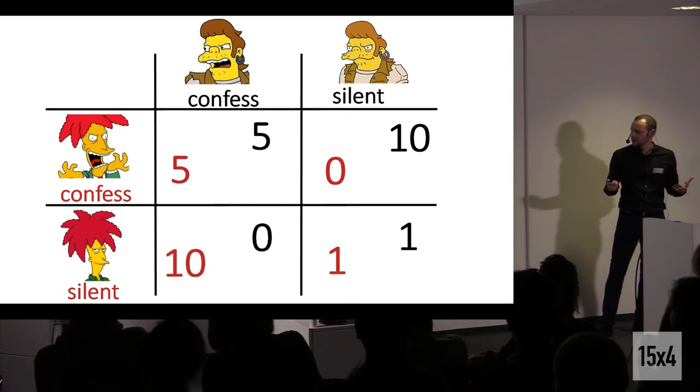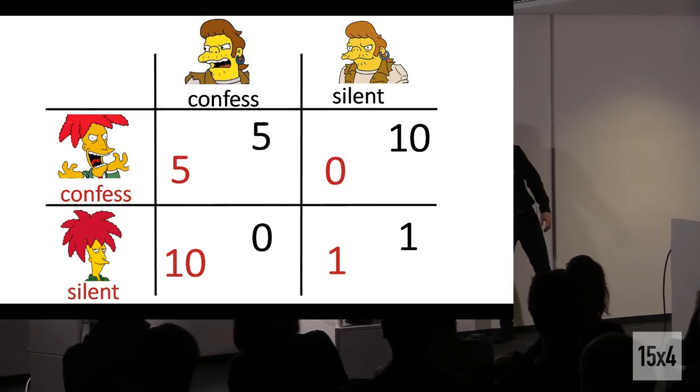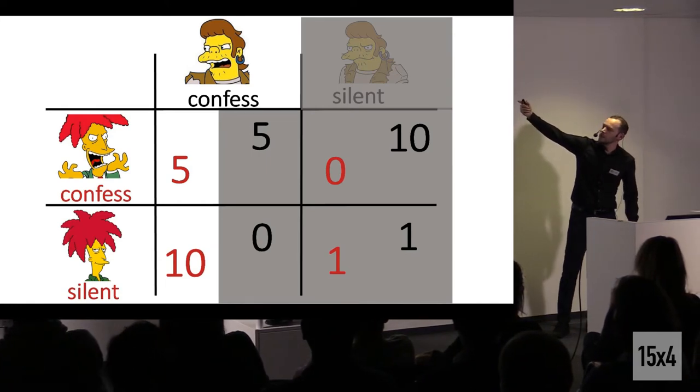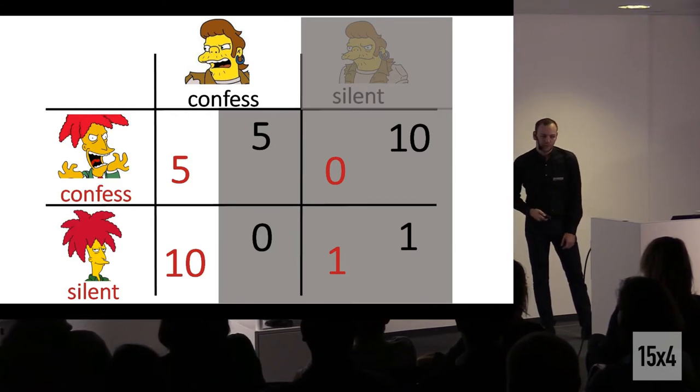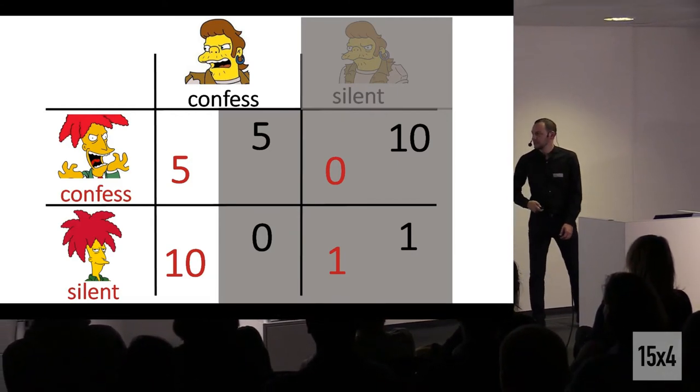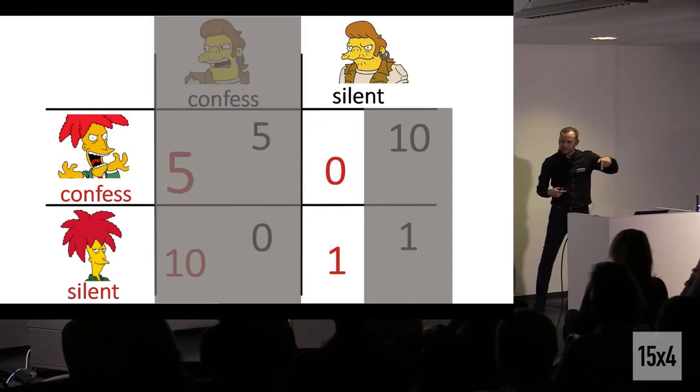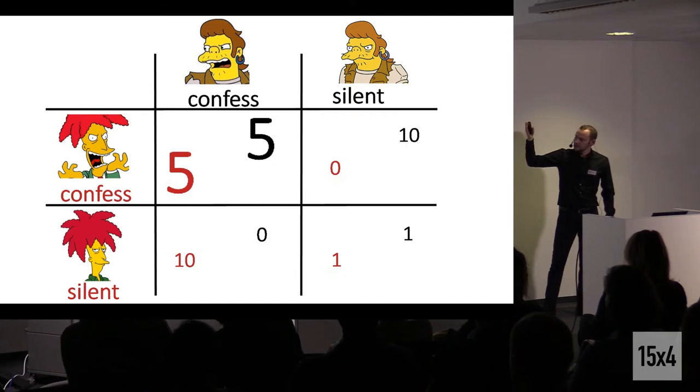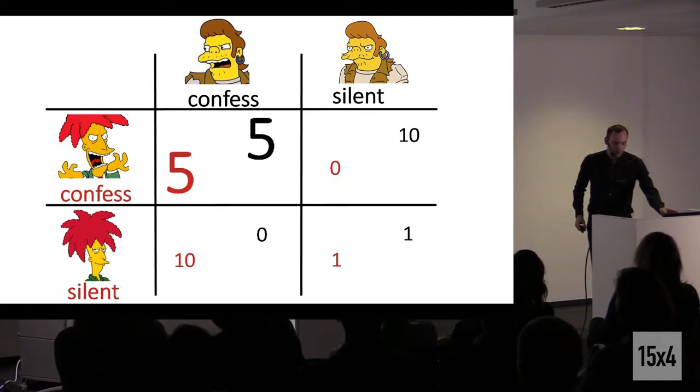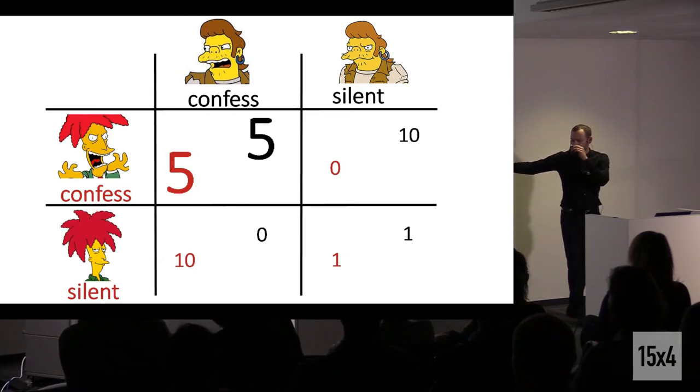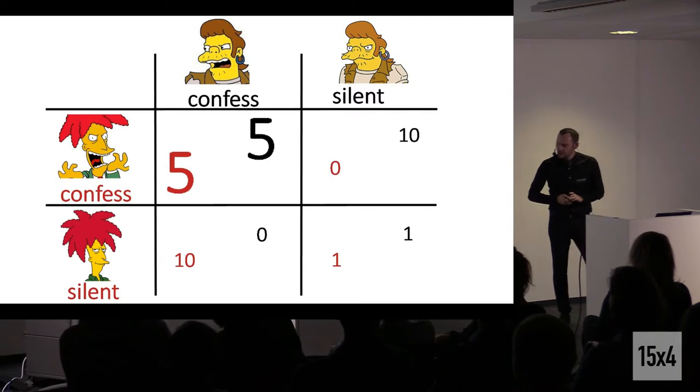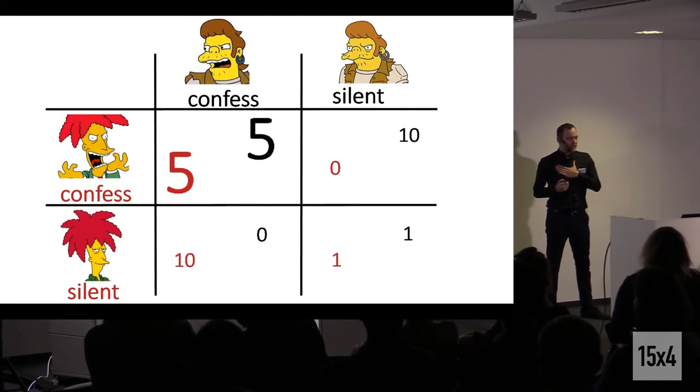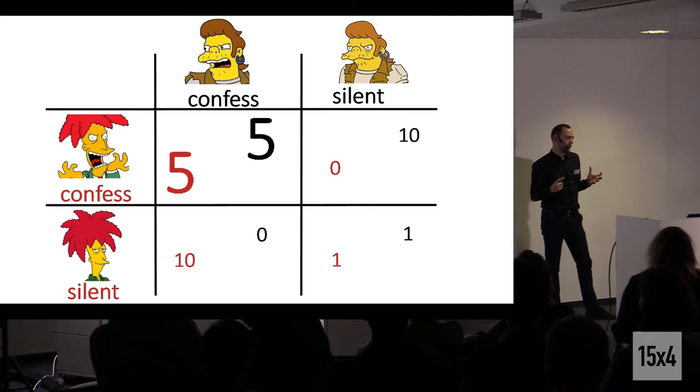And again, they both should cooperate, spending only one year in prison. But it doesn't work. Because the red player's criminal is thinking, what if the brown guy confesses, what should I do? Well, I should also confess, five years is better than ten years in prison. And if the other guy keeps silent, well, in that case I definitely should confess because I will go free. And the brown guy has the same argumentation. At the end, again, confessing is the dominant strategy and they will both spend five years in prison instead of one year. And this prisoner's dilemma shows in an elegant way that if each individual pursues his own self-interest, the outcome for each and for the group is worse than if they had cooperated.